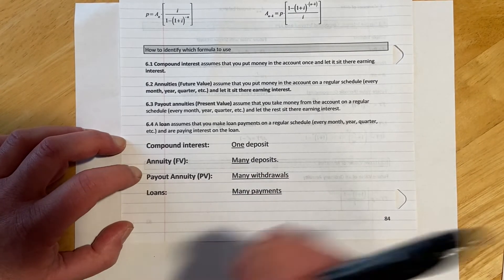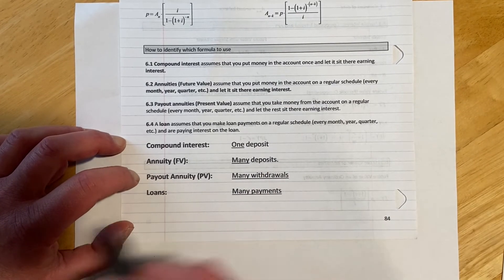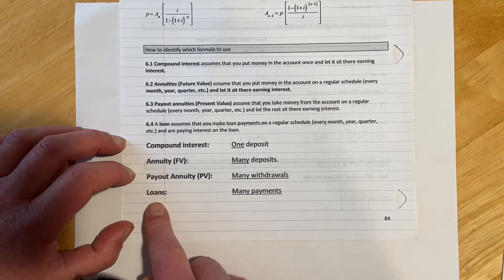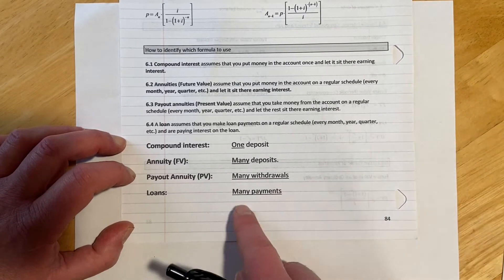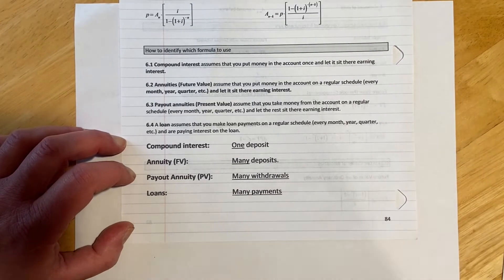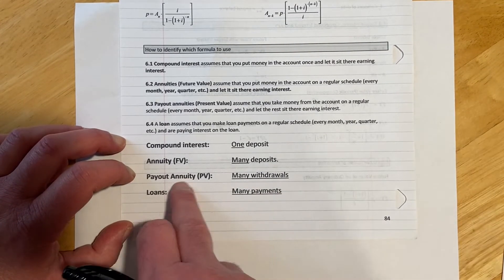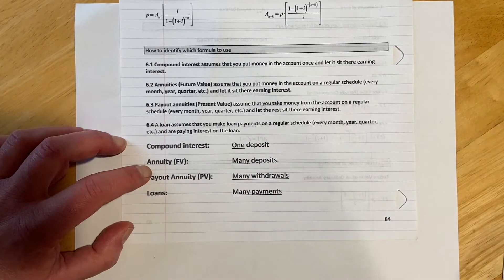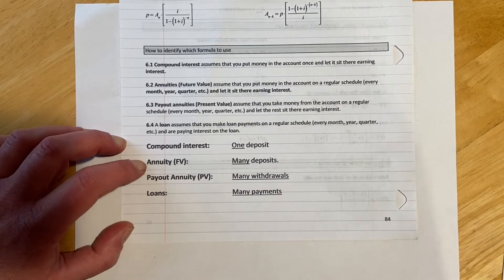With a loan, you don't have the money, you're borrowing the money, and you're going to pay it back over time. So with a loan, that is going to be lots of payments going from you to something else. But when you have an annuity, the payments are going from the annuity to you, it's your money.